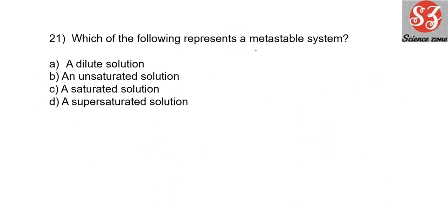Next: 'Which of the following represents a metastable state?' The answer is a supersaturated solution. A supersaturated solution is so highly saturated that if even one small particle is added, the solution is disturbed and precipitate is created. If even a tiny crystal falls in, the entire solution is disturbed and precipitates out. That is why it is called a metastable state — even a slight disturbance can completely destroy it. Option D is correct.